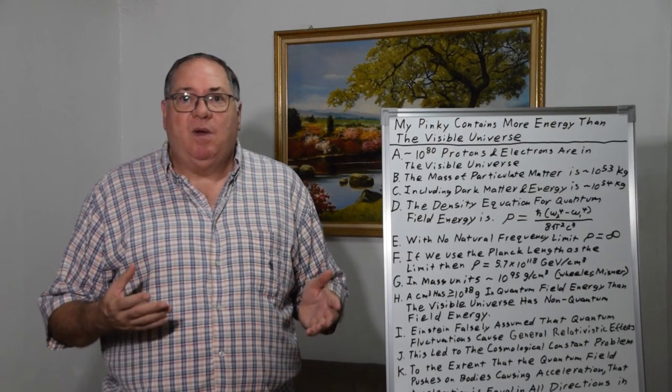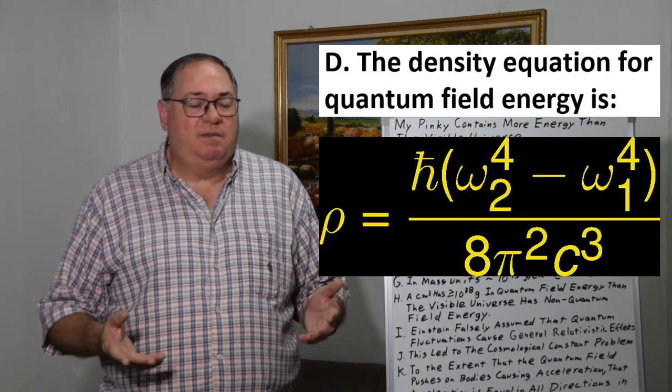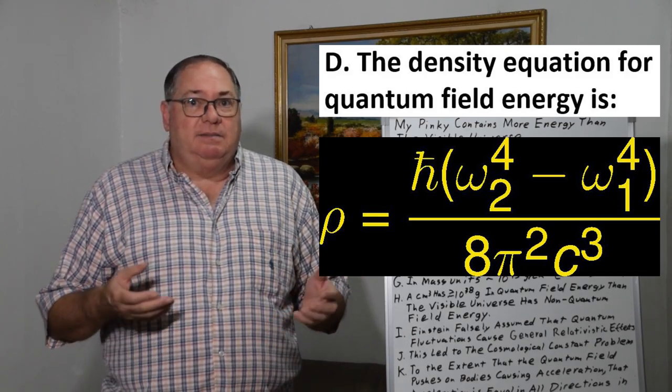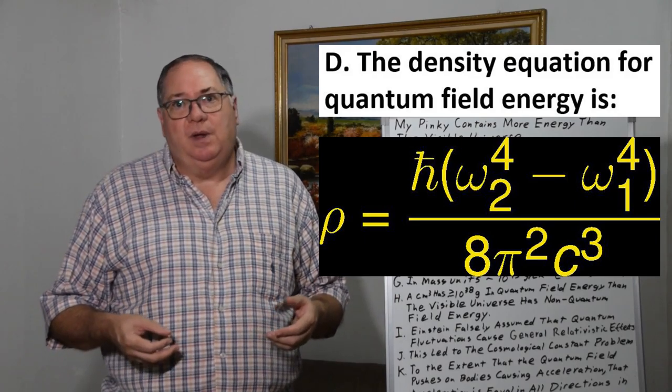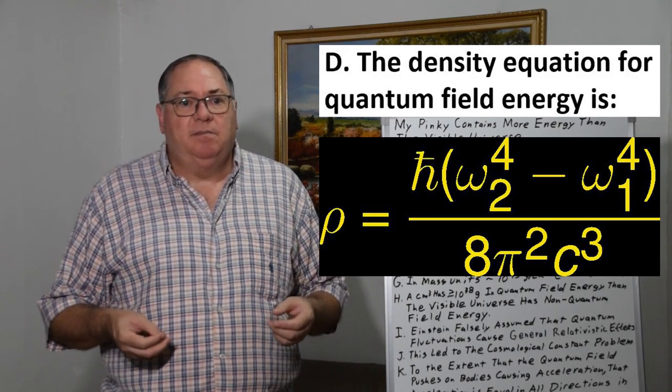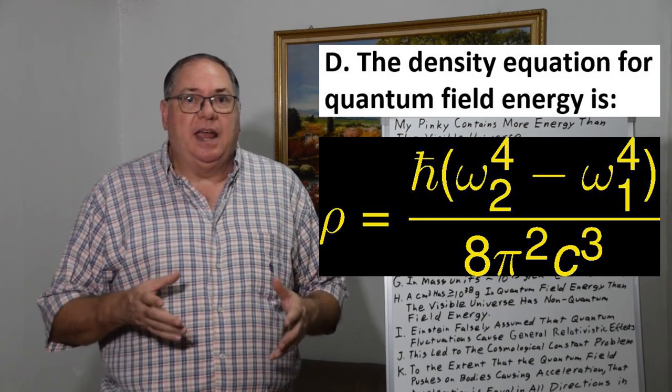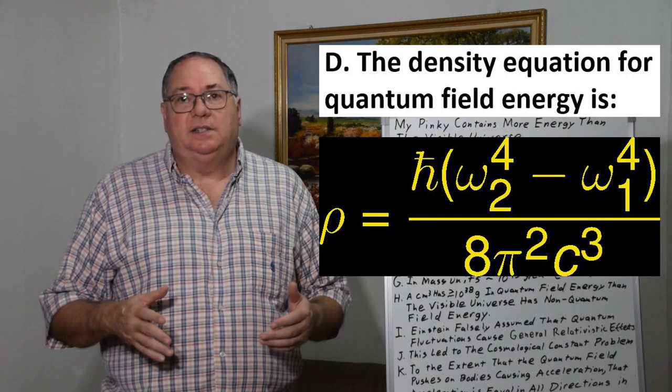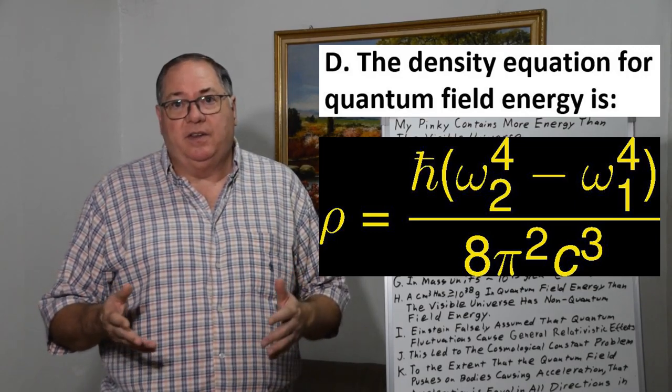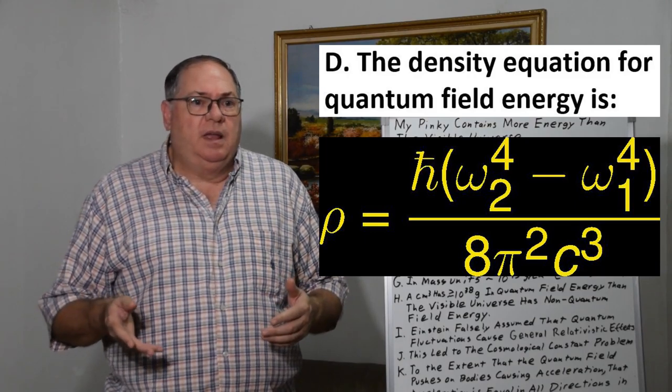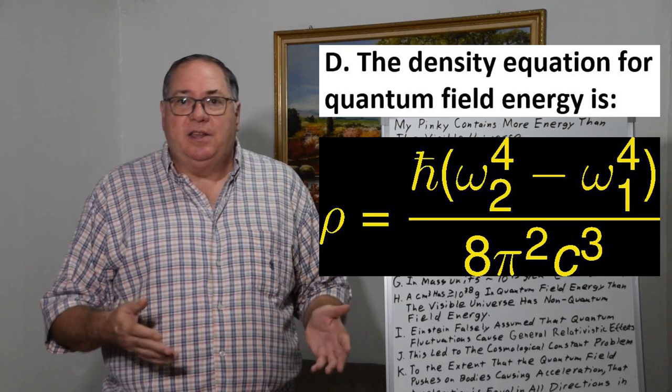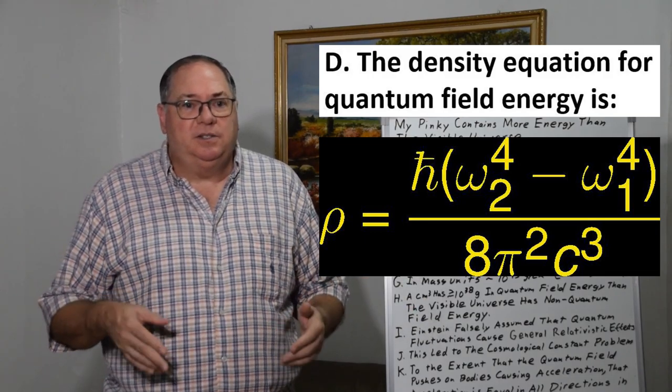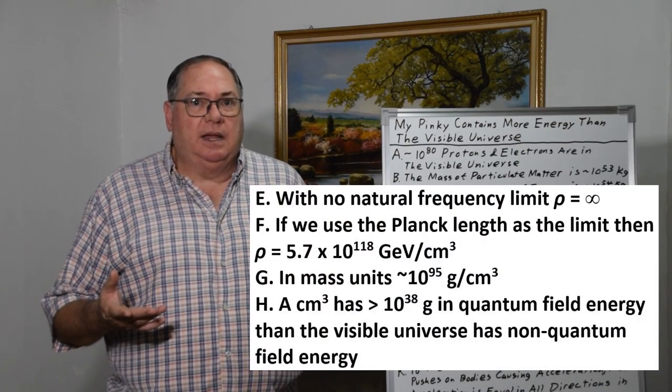To calculate the quantum field energy density, there's a basic equation found in any decent text on quantum mechanics. The density rho equals h-bar times omega to the fourth, which is the angular frequency of the quantum fluctuations, divided by 8 pi squared c to the cube, c being the speed of light cubed. So this equation is really standard. You just plug in the numbers.